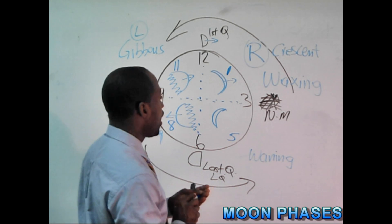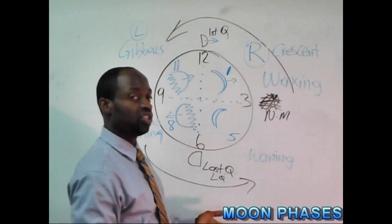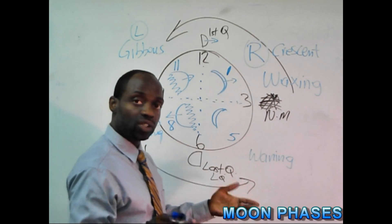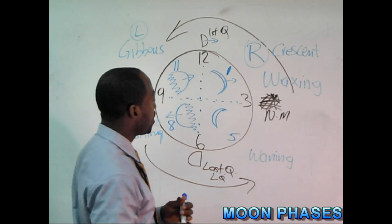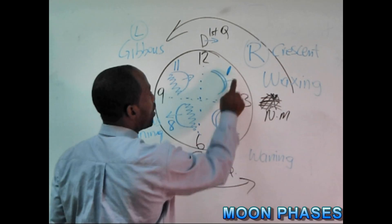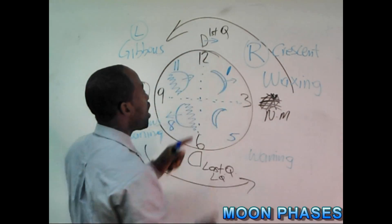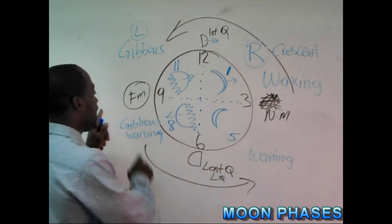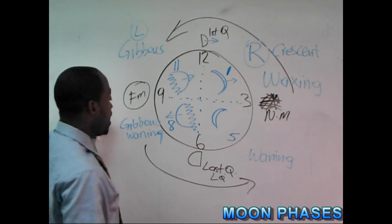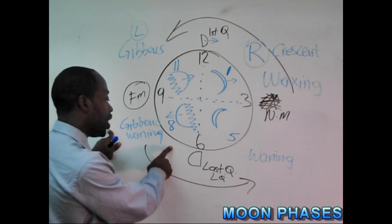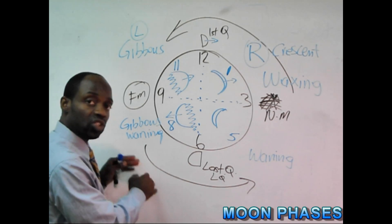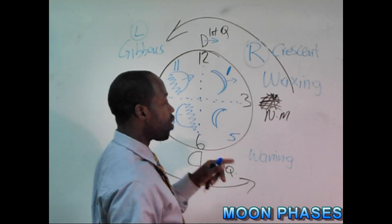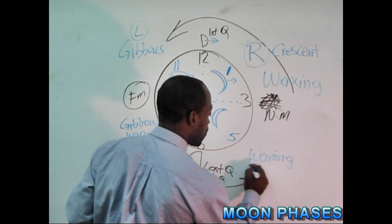Let's go back over this quickly. We're remembering the phases of the moon using a clock — anything with a face and numbers. 3 o'clock: new moon. 1 o'clock: waxing crescent. 12 o'clock: first quarter. 11 o'clock: waxing gibbous. 9 o'clock: full moon. 8 o'clock: waning gibbous — because waning means to get darker. 6 o'clock: last quarter. 5 o'clock: waning crescent.